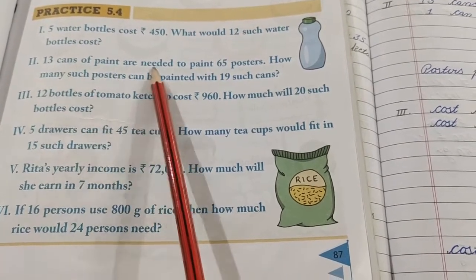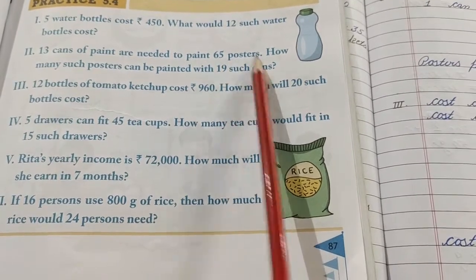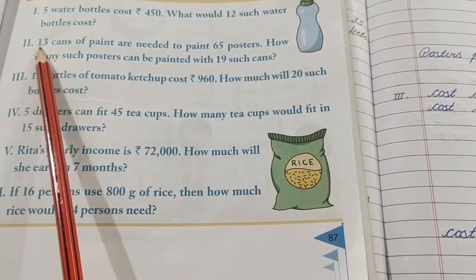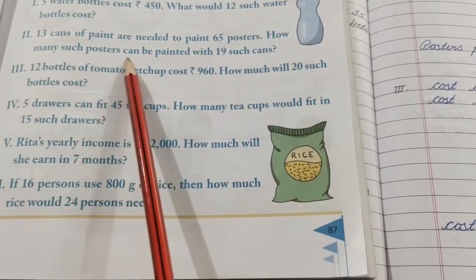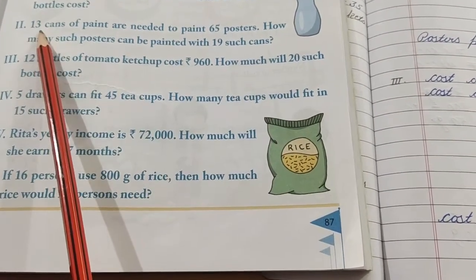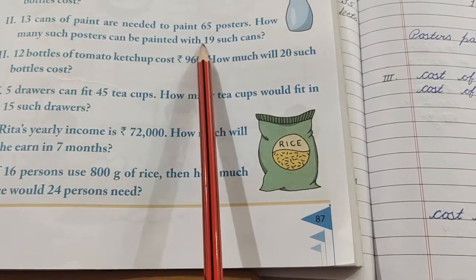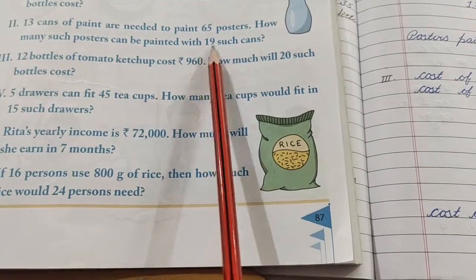Thirteen cans are needed to paint 65 posters. How many such posters can be painted with 19 such cans? So we will go from 13 cans first to 1 and then from 1 to 19. Right? Now you will see the example.